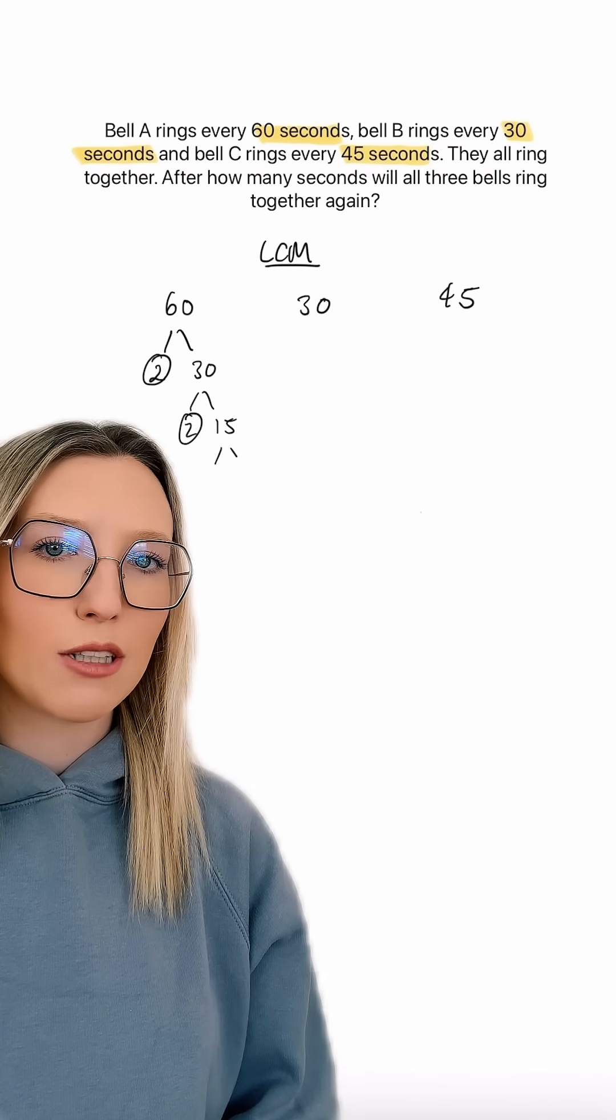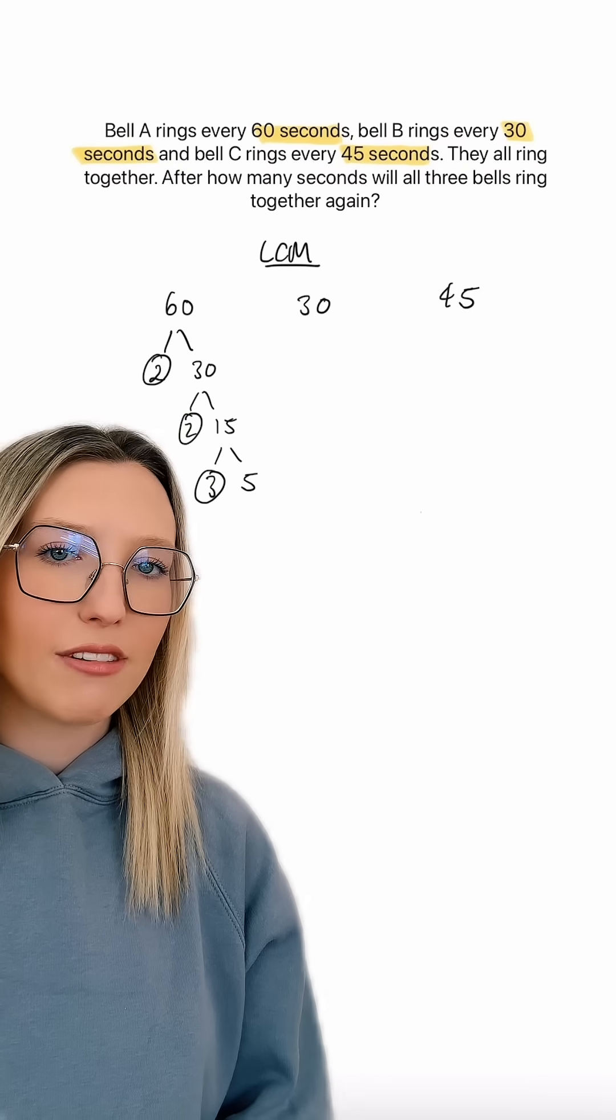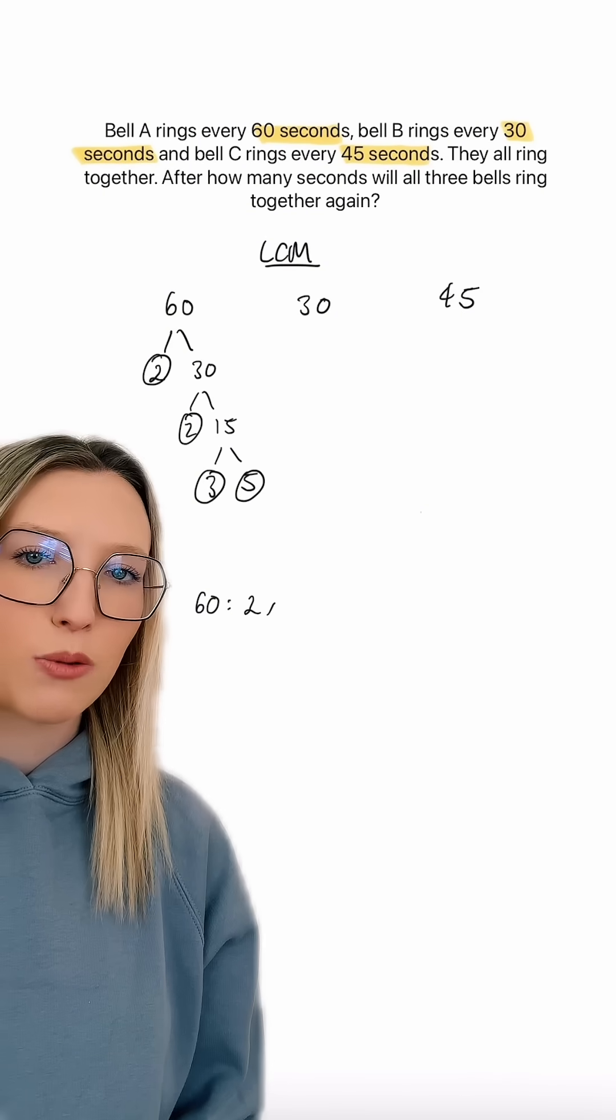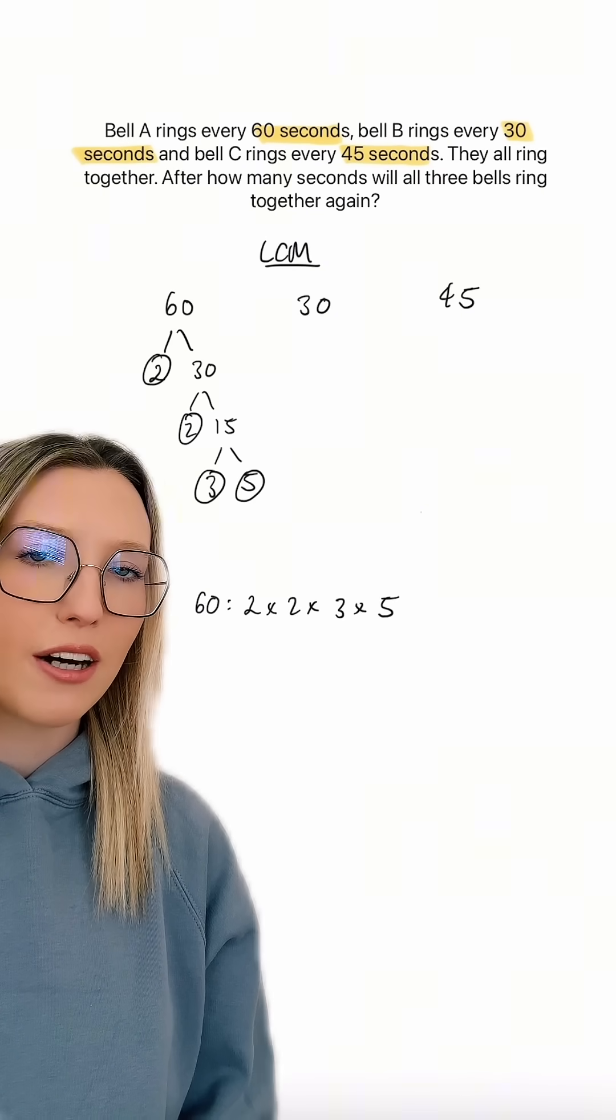So for 60 we can do as 2 times by 30, then 2 times by 15, then 3 times by 5. So 60 written as a product of its prime factors is 2 times by 2 times by 3 times by 5.